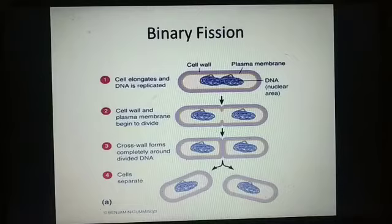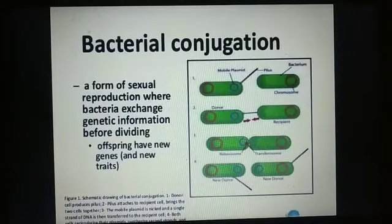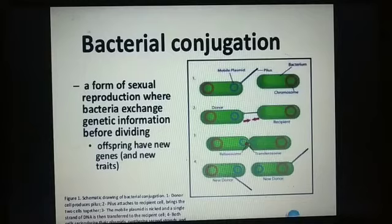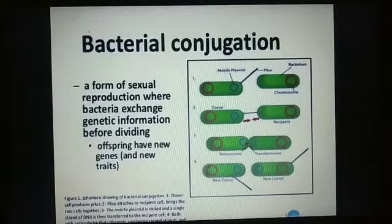The next process is sexual reproduction, which we call the parasexual process — also known as genetic recombination. This sexual reproduction occurs in bacteria by three methods: first, bacterial conjugation; second, transformation; and third, transduction.